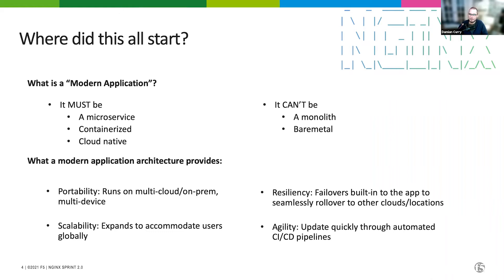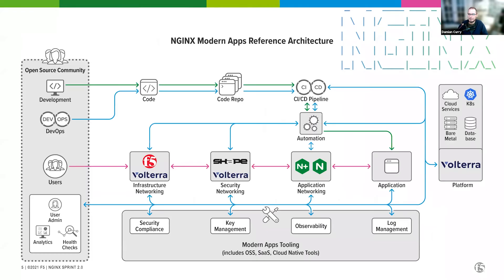As we talked about this internally, we figured people needed a diagram to look at, so we put together a diagram that has gone through many iterations. One of the core pieces of a modern application is that everything runs as code. It's not just the development team pushing code into repos and CI/CD pipelines — it's also your DevOps team, your platform ops team, and your SecOps team. Defining your infrastructure as code provides resiliency, portability, and agility.